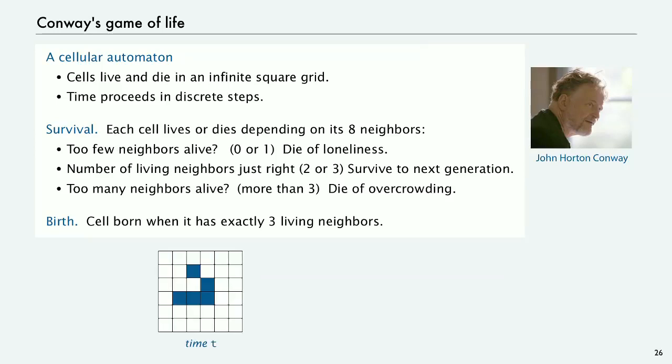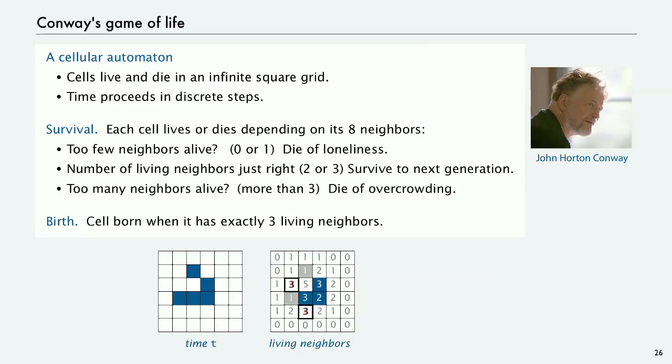These are simple rules and you see how they work in just a second. So, suppose we have this configuration at a particular time T. Then what we can do is, for every cell, you can count the number of neighbors. It's eight direct neighbors. And these are the counts for this. And you can figure out what's going to happen to each cell based on those counts. The one at the fringes are zero. There's a couple that have exactly three.